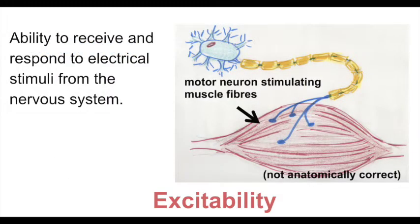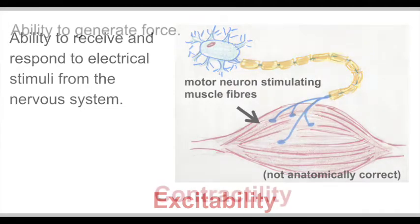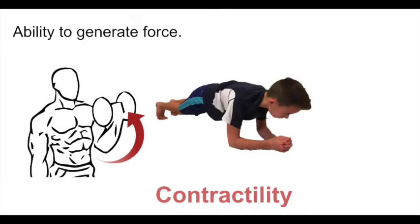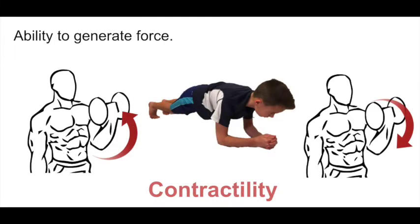Excitability is the ability of muscle to receive and respond to electrical stimuli from the nervous system. Contractility is the ability of muscle to generate force as a result of receiving this electrical stimuli. When we think of muscle contraction, we usually think of a muscle shortening — for example, the up phase of a bicep curl. However, muscle can generate force but not shorten, staying the same length as in a plank exercise. It can also lengthen, as in the down phase of a bicep curl.